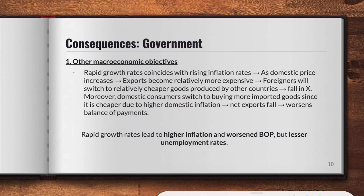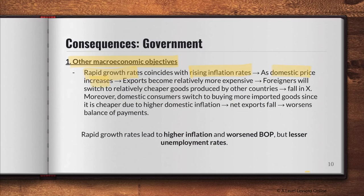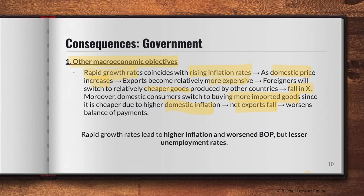For the government, they always want to focus on their micro and macroeconomic objectives. If there is rapid growth, it usually coincides with rising inflation, causing a domestic price increase. Exports become relatively more expensive, so foreigners switch to cheaper goods produced by other countries — leading to a fall in exports, affecting the balance of payments. Meanwhile, domestic consumers also switch to buying more imported goods, which are relatively cheaper, causing a fall in net exports and a rise in imports — worsening the balance of payments.